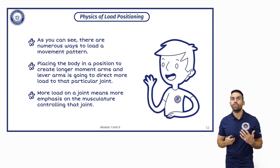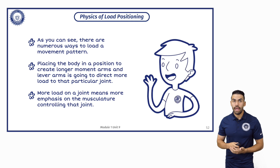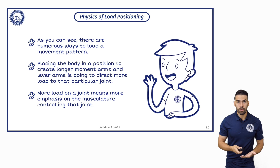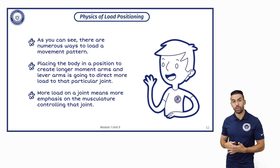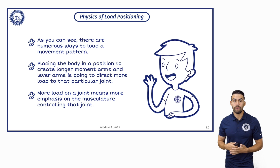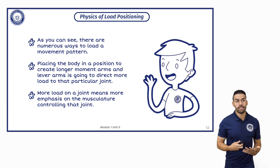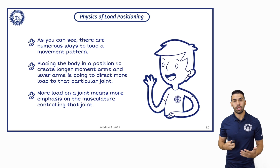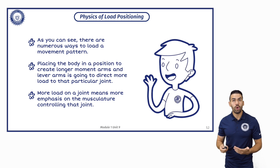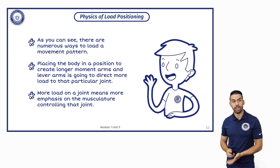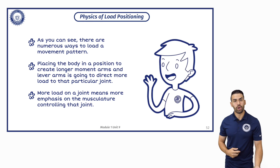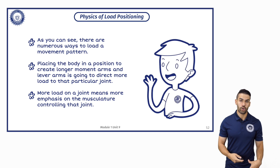There are numerous ways to load a movement pattern. Placing the body in a position to create longer moment arms and lever arms is going to directly load that particular joint more. If you choose an exercise that has a much larger moment arm, it's going to be much more demanding on that joint. More load on a joint also means more emphasis on the targeted musculature controlling that joint. So if we have a longer moment arm exercise targeting the knee joint, we're going to have much greater demands on our quads.